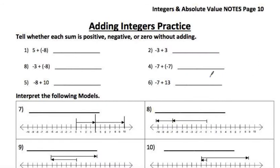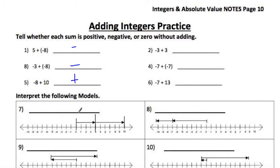Let's do some adding integers practice. All you're going to do is tell me if the result is positive, negative, or zero without adding. Remember, you can tell by which number has the larger absolute value, or if they have the same sign. For example: different signs means keep the sign of the larger absolute value — so it's negative for that one. Same signs means add and keep the sign — these are positive.